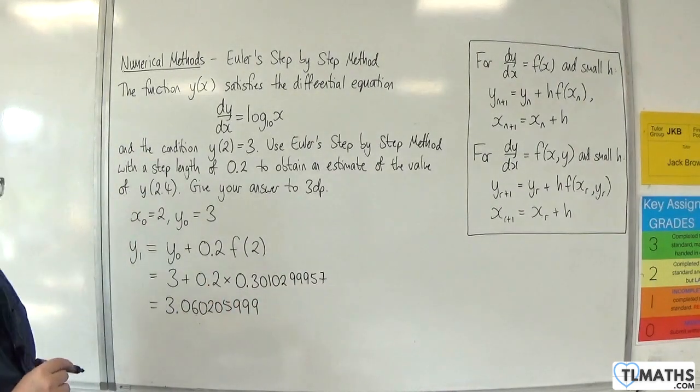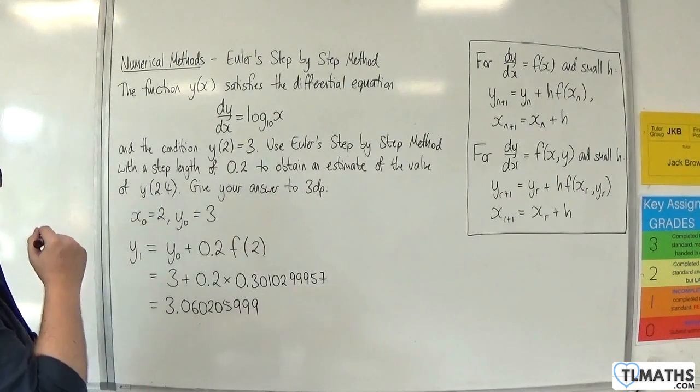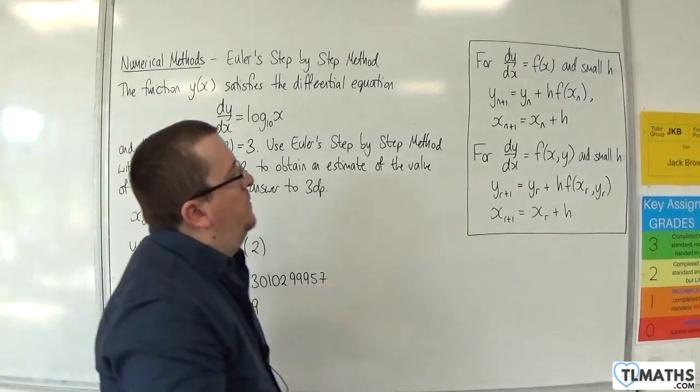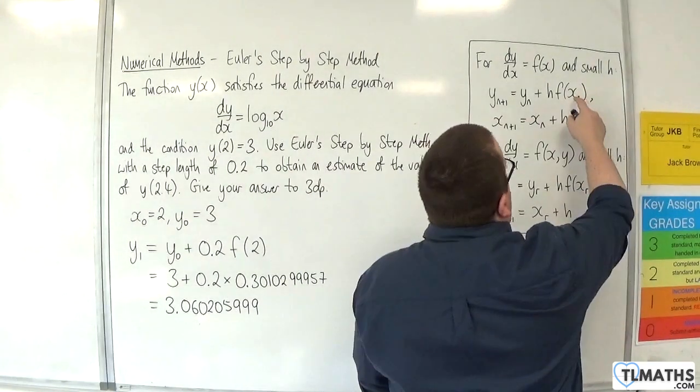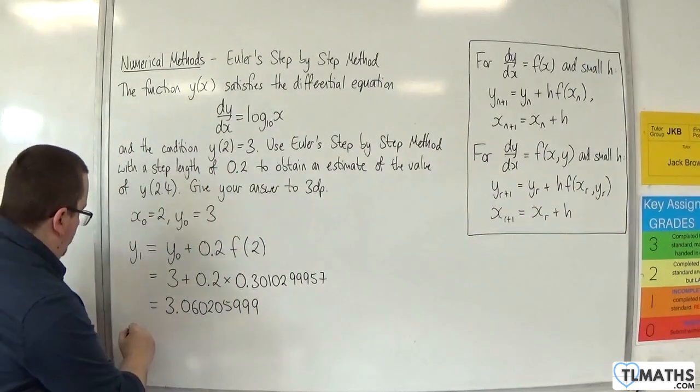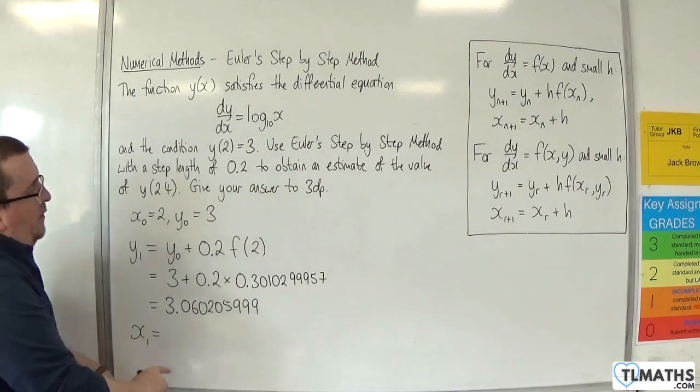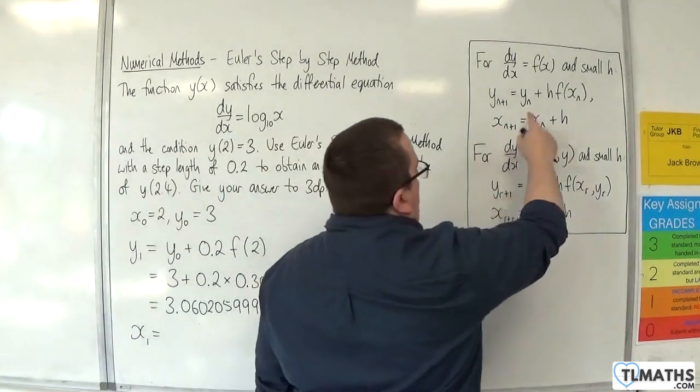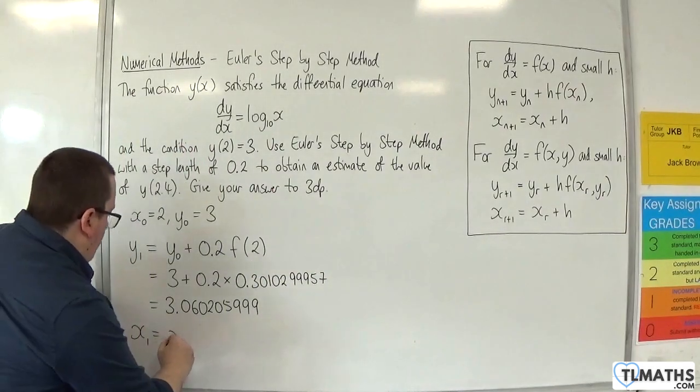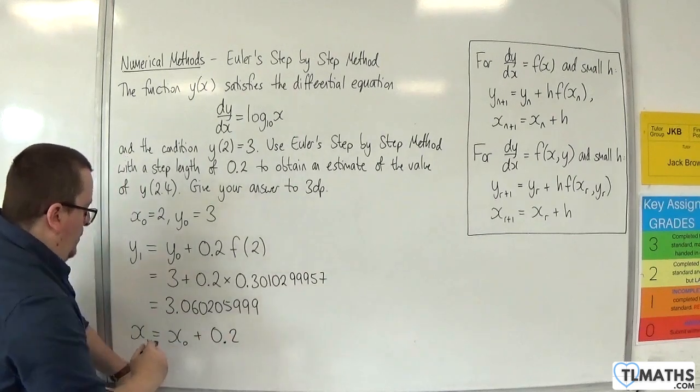So that is y1. Now I need to get to y2, but in order to get to y2, I'm going to need x1. So I need my next x value. The next x value is the previous x value plus h. So that would be x0 plus the step length, 0.2. So x0 was 2, so we should have 2.2.